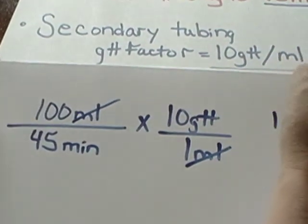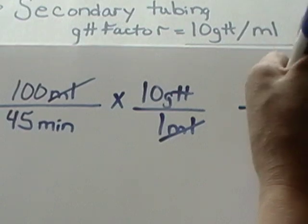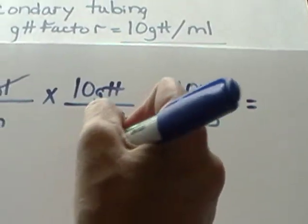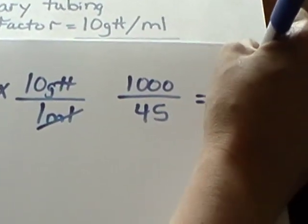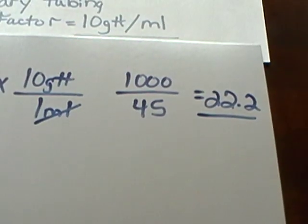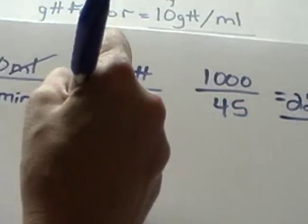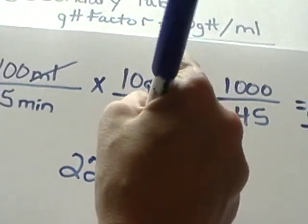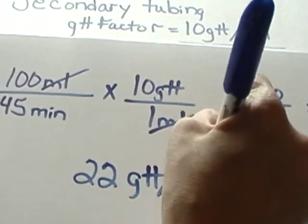We have 1000 divided by 45, which will equal 22.2. According to our rounding rules, that would be 22 drops per minute.